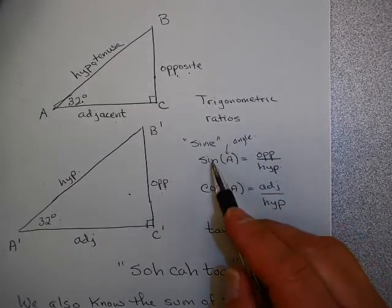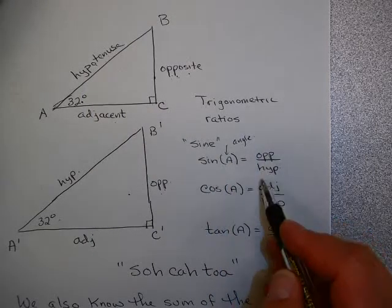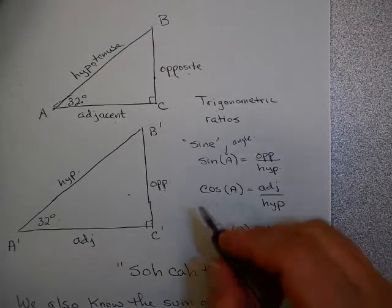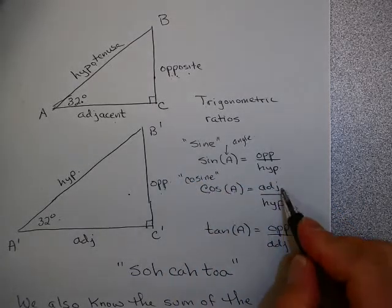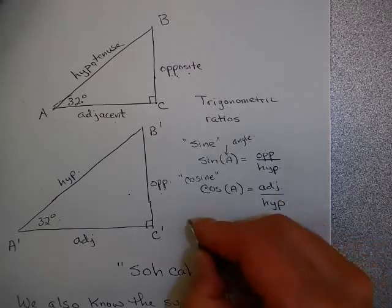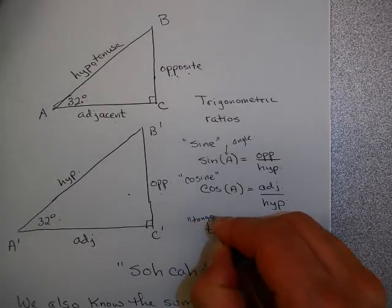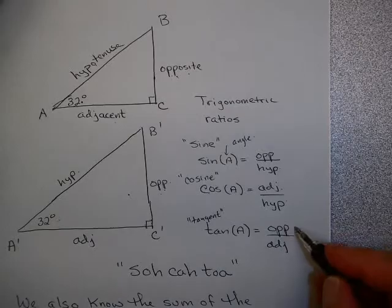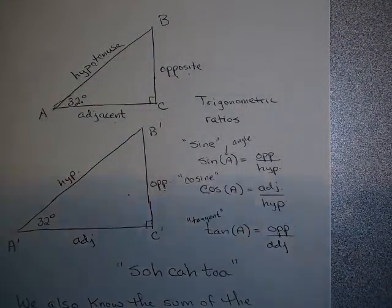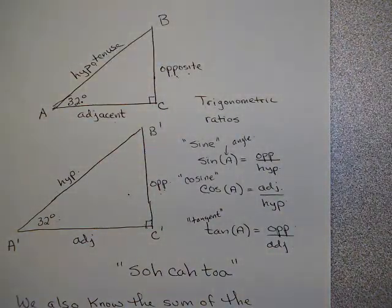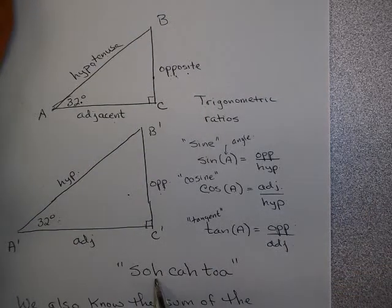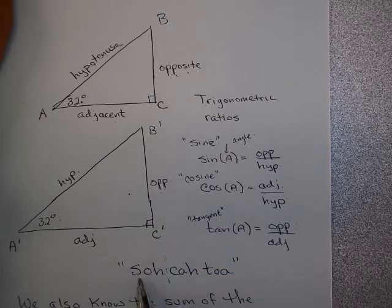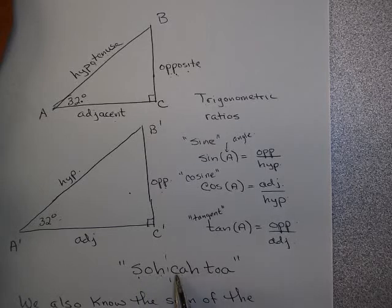So sine of an angle is the opposite side divided by the hypotenuse. Cosine is another trigonometric ratio — the cosine of an angle is the length of the adjacent side divided by the length of the hypotenuse. And tangent of an angle is the opposite side divided by the adjacent side. We have the acronym SOHCAHTOA: sine is opposite over hypotenuse, cosine is adjacent over hypotenuse, and tangent is opposite over adjacent.